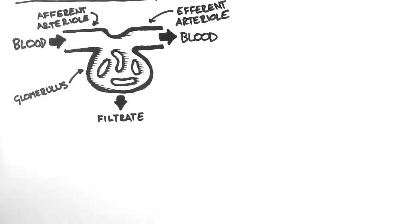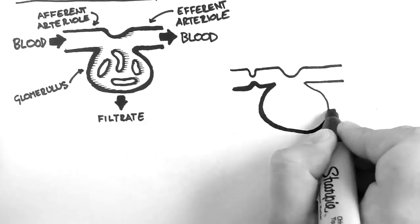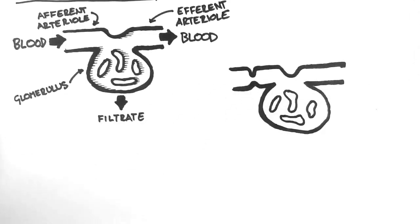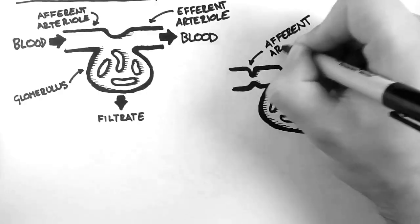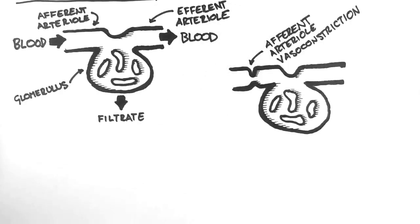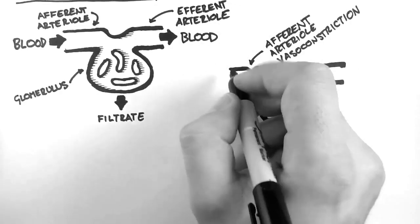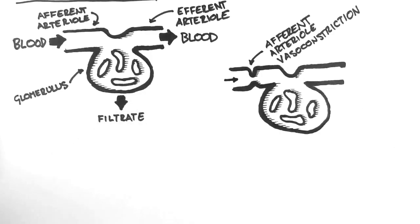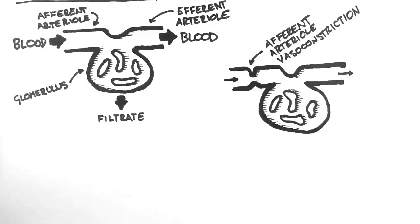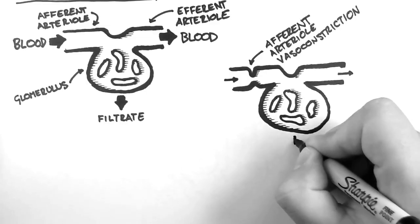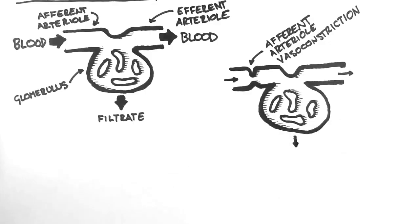So let's look at what happens when we change things around a little. In this situation, the afferent arteriole has been vasoconstricted. This means that less blood is able to enter the glomerulus and consequently there will be less blood to leave via the efferent arteriole and there will also be less blood to be filtered by the glomerulus.